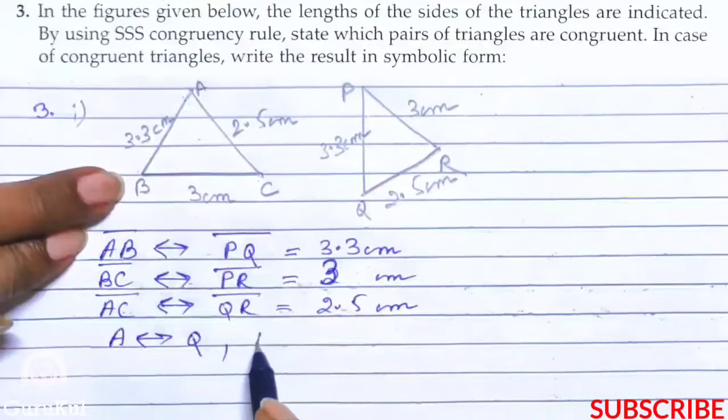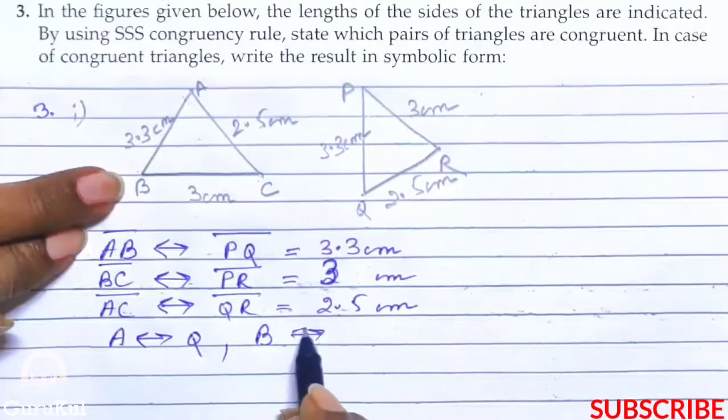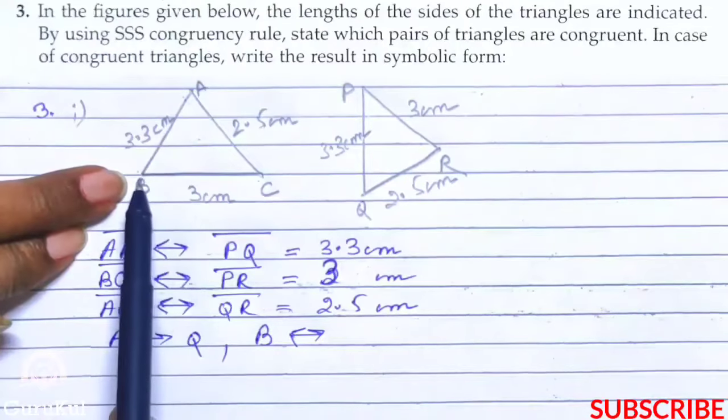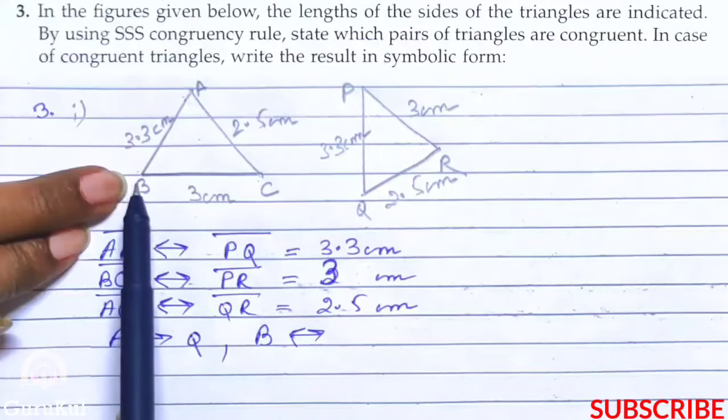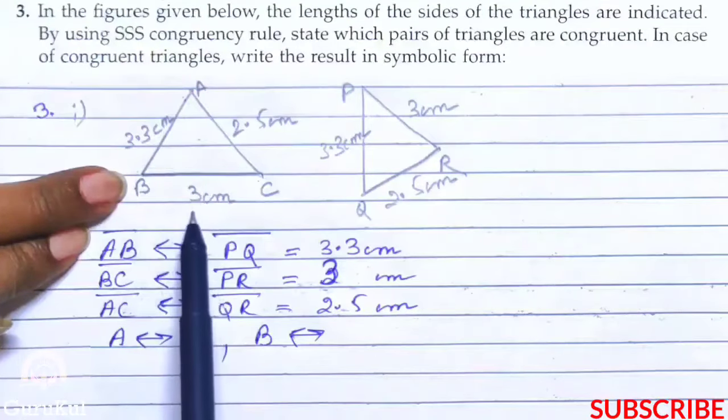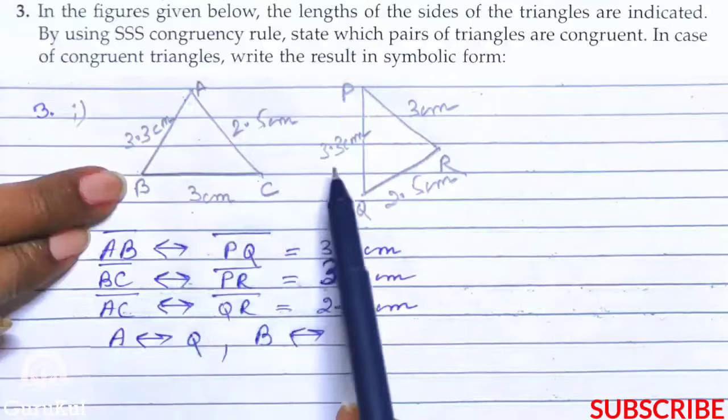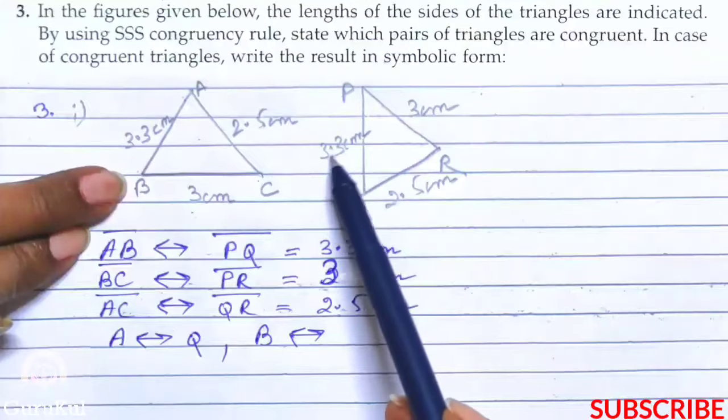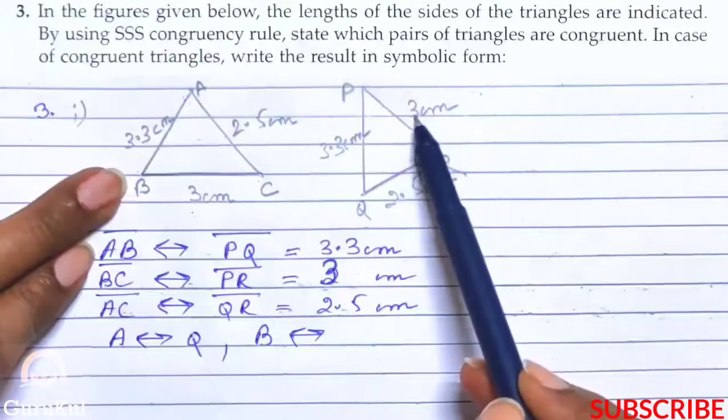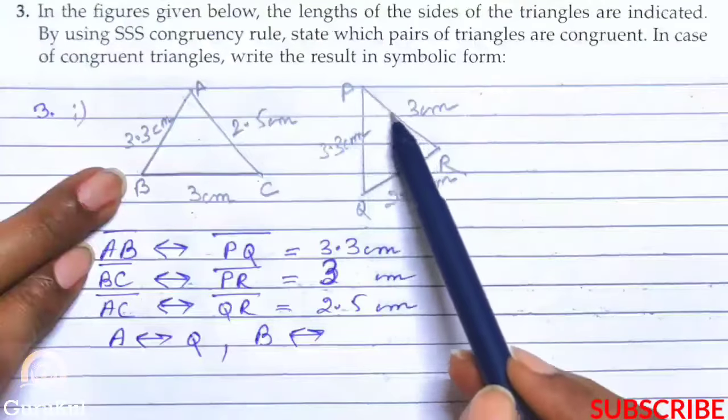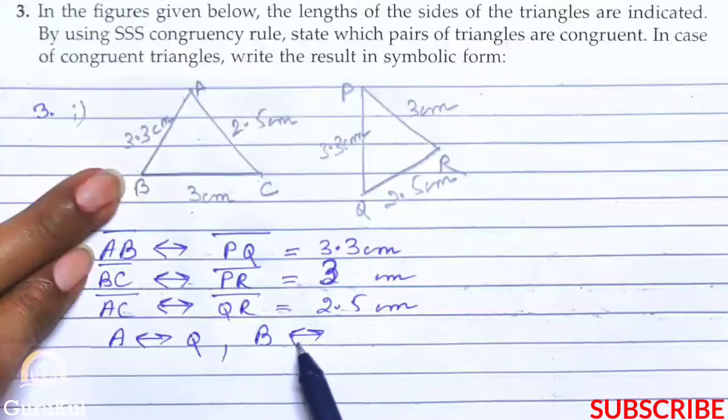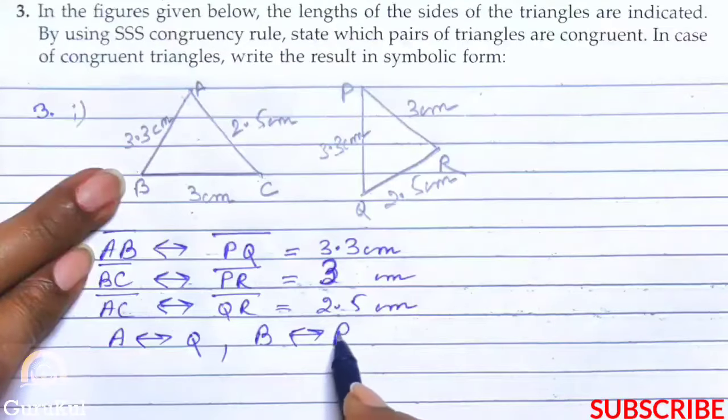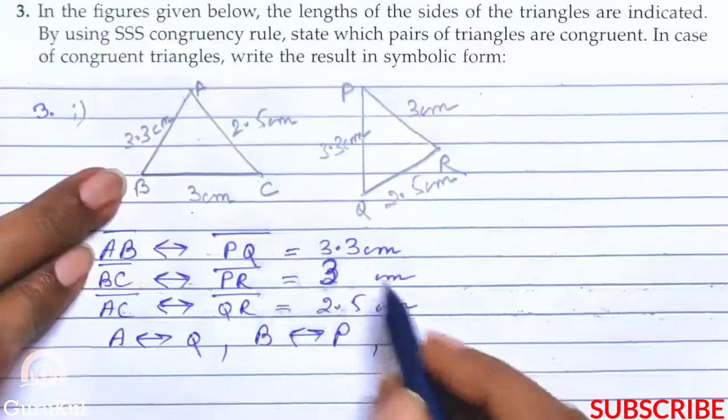Next, B. So B is congruent to, now how do we find out? Which arms join the vertex B? 3.3 and 3, right? So here in the next triangle, 3.3 and 3, when these meet which vertex are they giving you? P. So B is correspondence to P.